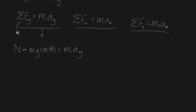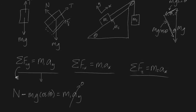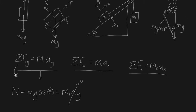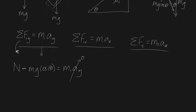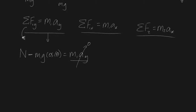We know that our acceleration in the y direction is always going to be equal to zero — that's true even if the block is sliding up or down the hill — because the block won't go into the ground or come off the surface. So the entire ma term cancels, and we're left with: N equals m1g cosθ.